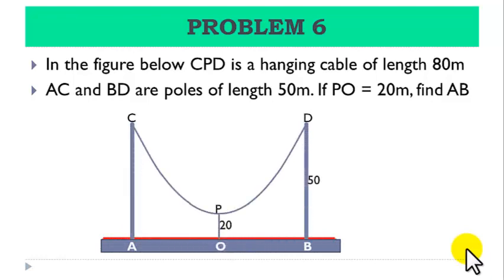Here is the figure. Here are the two poles AC and BD, each of length 50 meters. CPD is the hanging cable with center at the point P. The distance of the center P from the ground level is 20 meters. We are required to find the distance between the poles AB.